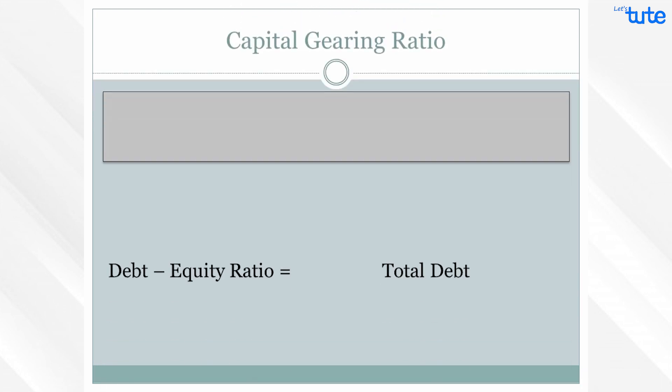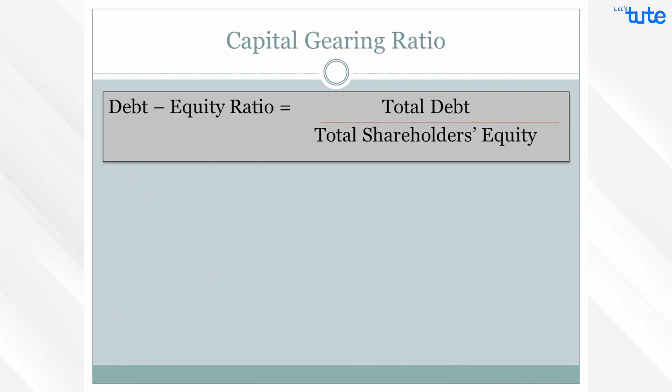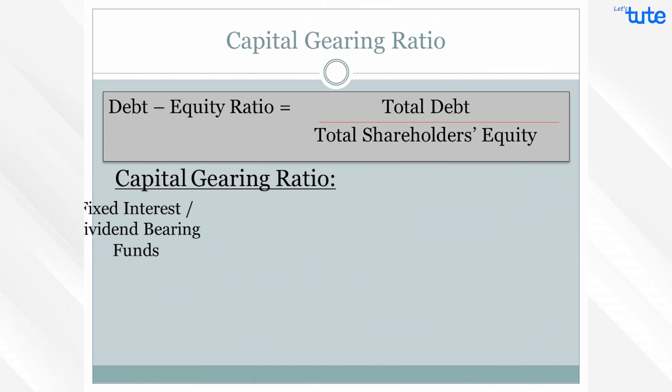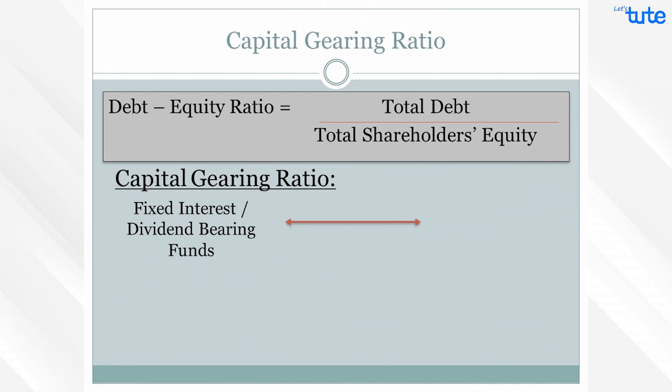Now if we just do a small recap — in the previous session, we studied debt equity ratio which is derived by comparing total debt with total shareholders' equity. There is a little change in capital gearing ratio, which compares fixed interest or dividend bearing funds with common stockholders' equity.